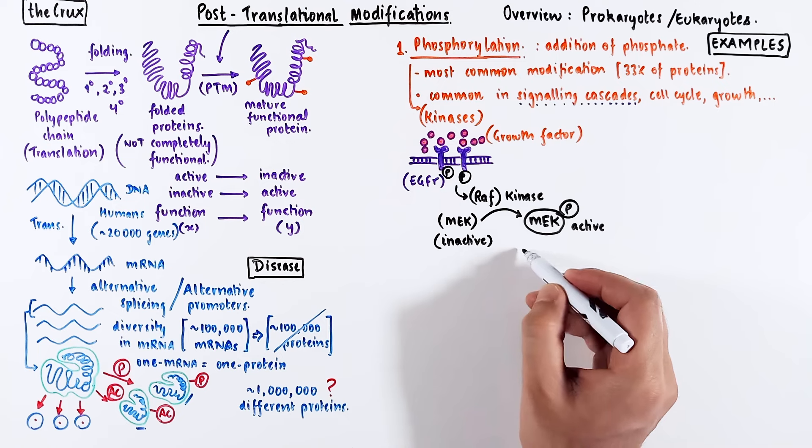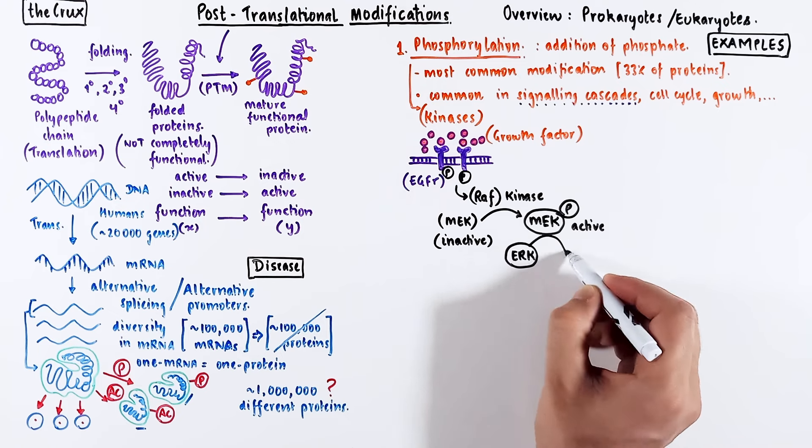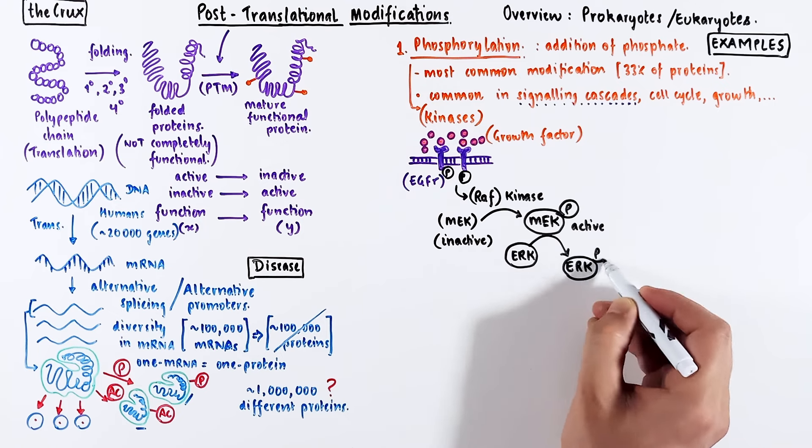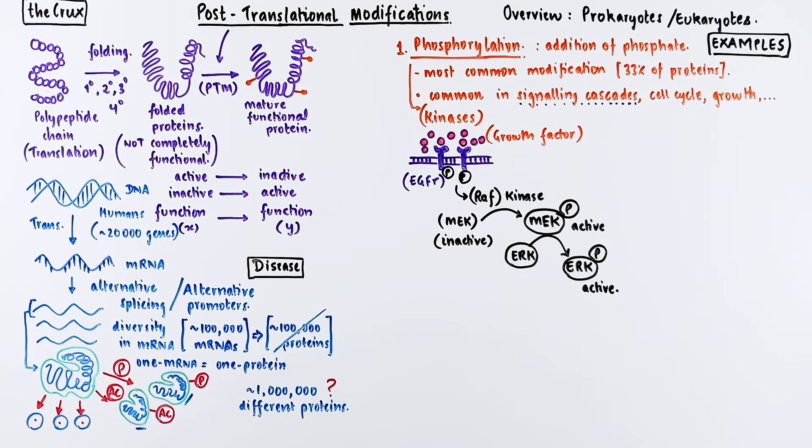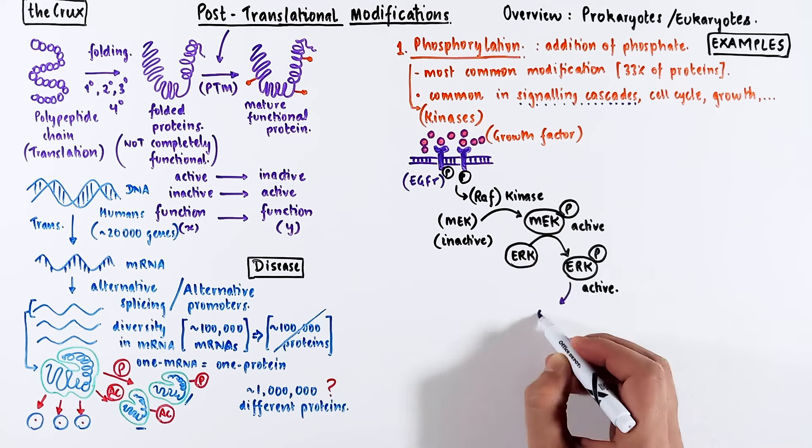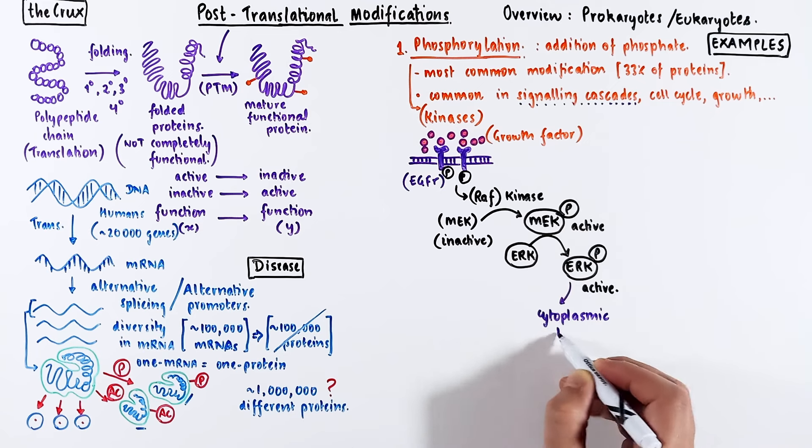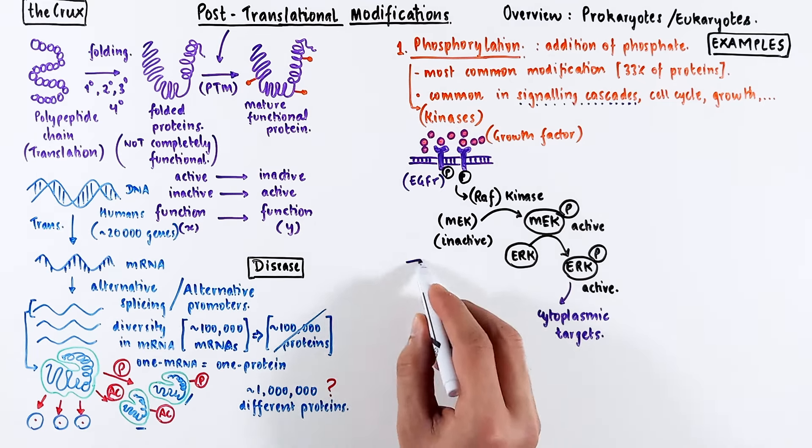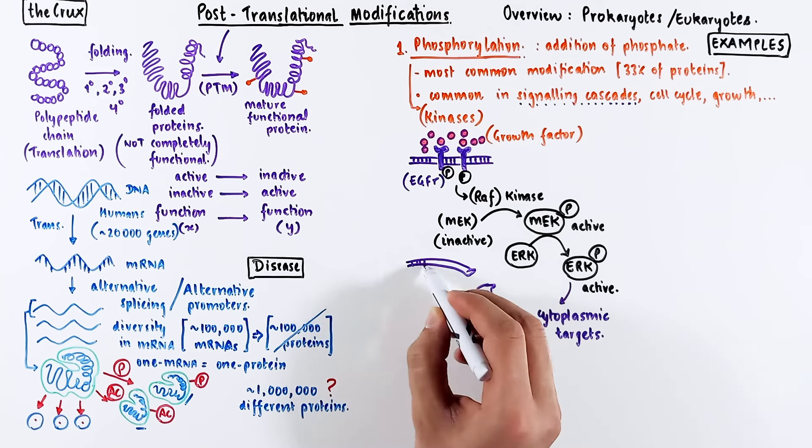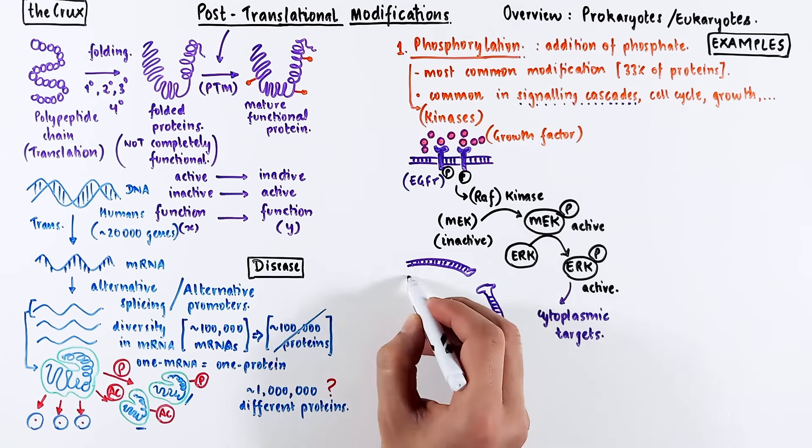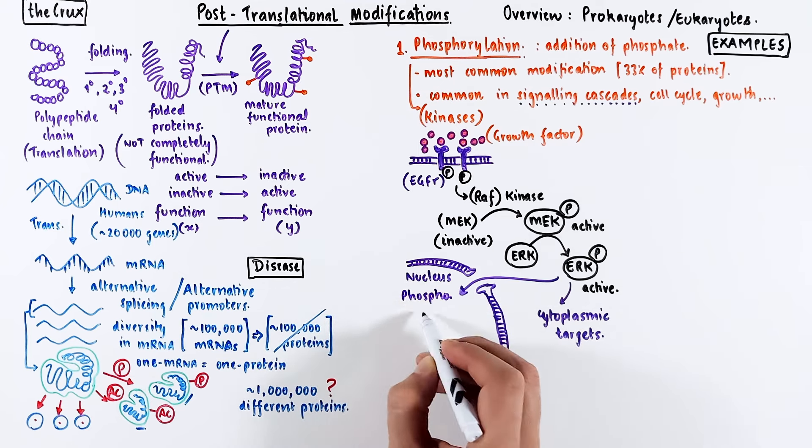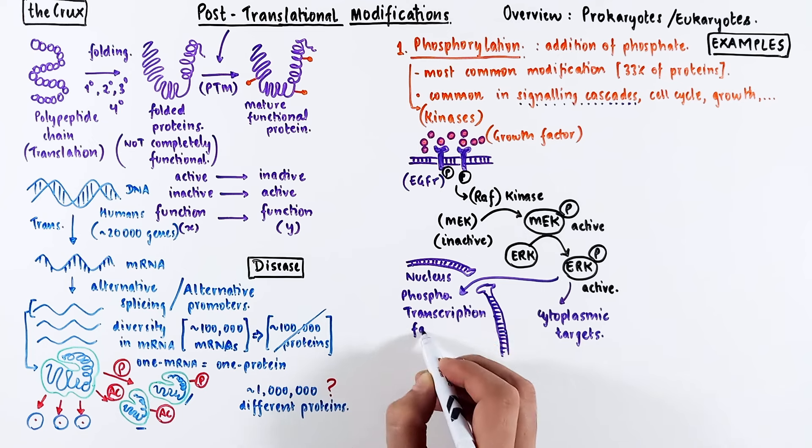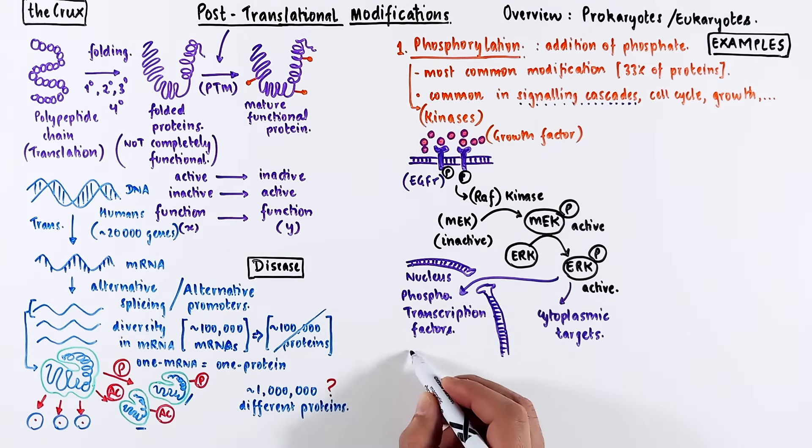Active MEK also happens to be a kinase and activates another downstream protein by adding a phosphate to it. This phosphorylated ERK, also a kinase, can target many cytoplasmic proteins and can be transported into the nucleus where it can phosphorylate transcription factors. Notice that only phosphorylated ERK can be transported into the nucleus. This highlights that phosphorylation can change the function and localization of a protein.